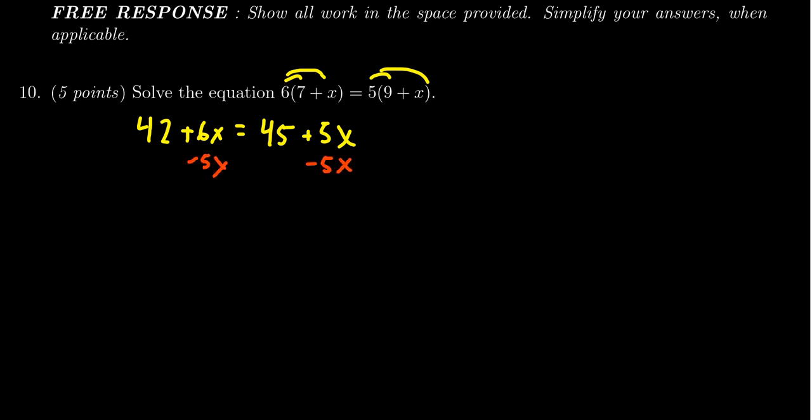I want to get the x's by themselves, so we're actually going to subtract 42 from both sides as well, which then on the left hand side you get the 6x minus 5x. On the right hand side you get the 45 minus 42.